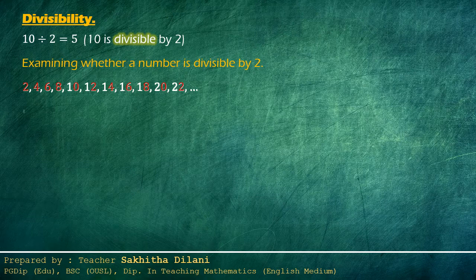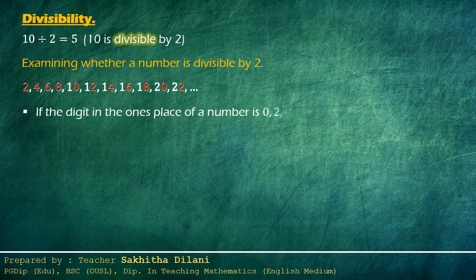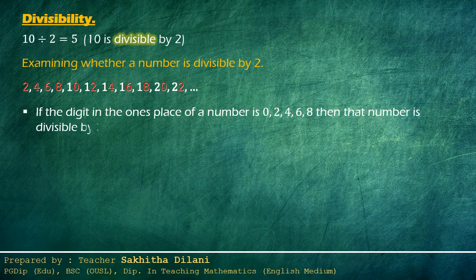That is, if the digit in the ones place of a number is zero, two, four, six, or eight, then that number is divisible by two.